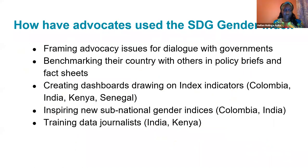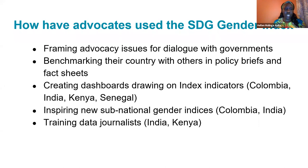The closer countries are to the 100 score, they are performing better. The closer they are to zero and the red, they are performing worse in the goals and indicators that the index looks at. So this is the big picture at a glance. We would like to share with you how we have been able to use the SDG gender index data in our work. These are just examples of what we have done in the last two years since the launch of the index.